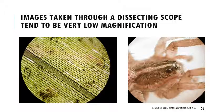Those images through the dissecting scope tend to be very low magnification. On the left we see a leaf where we can start to see cells but it's a much broader look. On the right we see a spider where we can see more details than with the naked eye, but not by much.